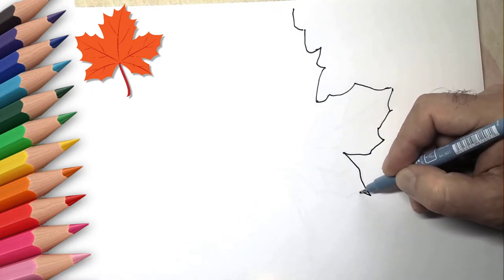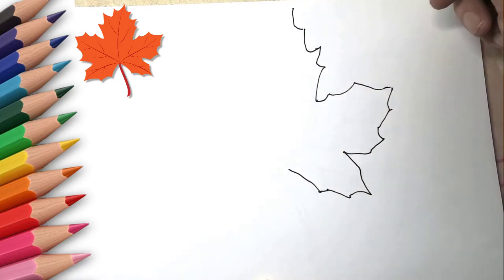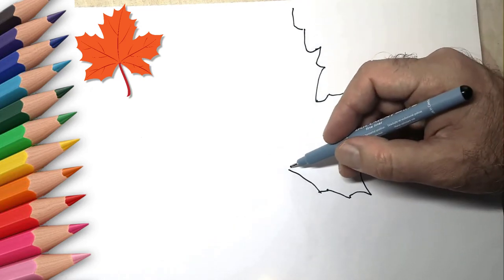First, draw the outline of the leaf. Look carefully at the shape of a maple leaf. It has five parts.